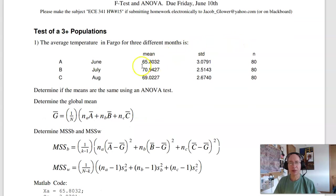The first problem: if you look at the average temperature in Fargo over the summer—June, July, August—for the last 80 years, is there a difference? To do that, we're going to do an analysis of variance test.